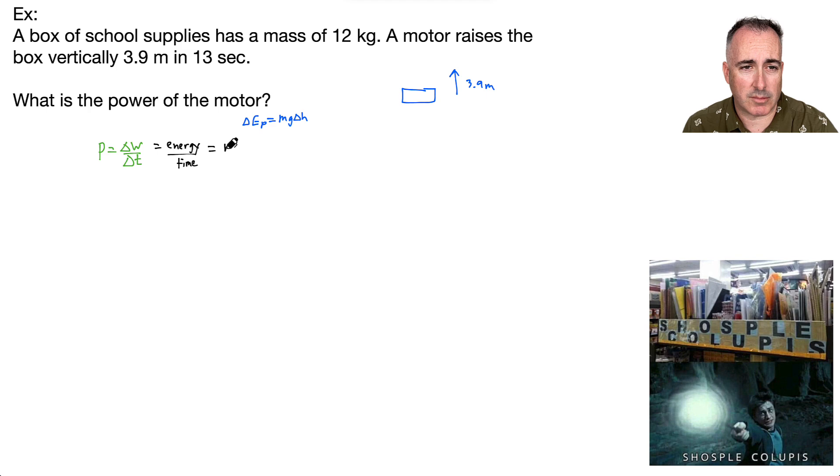Then we say, all right, that means it's going to be just M times G times delta H, all that over T. Do we know any of these values? We actually do. We know them all.